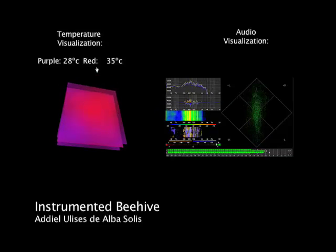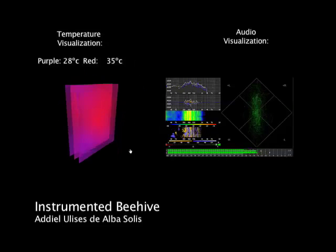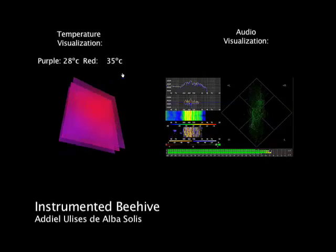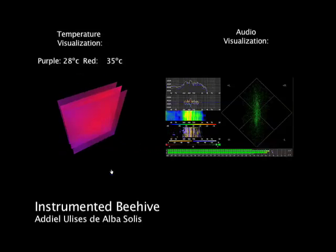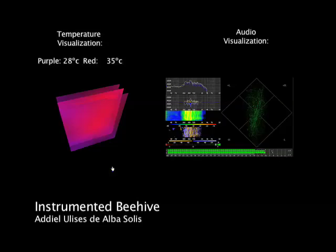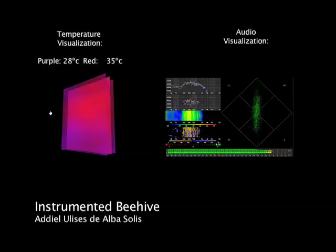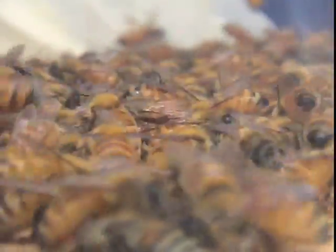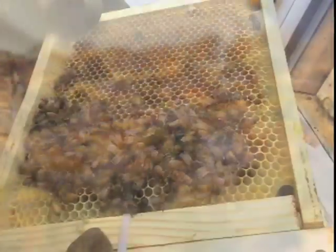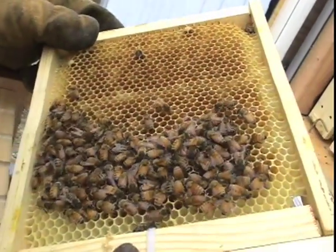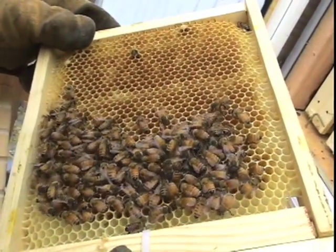Instrumented Beehive is a media art and scientific work that explores creative approaches in understanding complex biological systems. The final result is the possibility to experience, document and theorize about the activities and behavior of bees as social insects with complex dynamics.